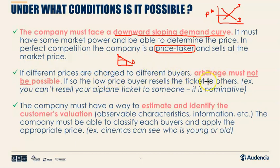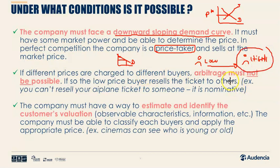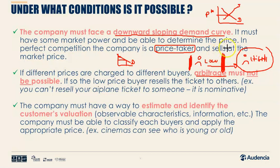The second condition is that I have to prevent arbitrage. If one person gets a low price and another a high price — say for a train ticket — and the low-price buyer can resell to the high-price buyer, I lose that sale. I have to separate these markets. For example, a student buying a cinema ticket at a low price and reselling it to an adult would hurt the cinema. The fix is marking the ticket as a student ticket and verifying at entry.